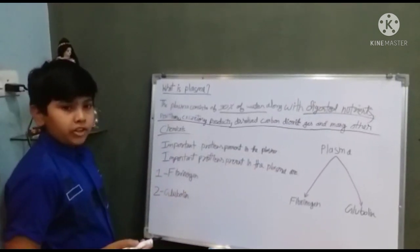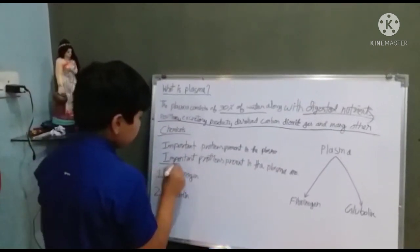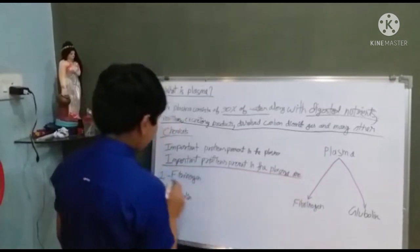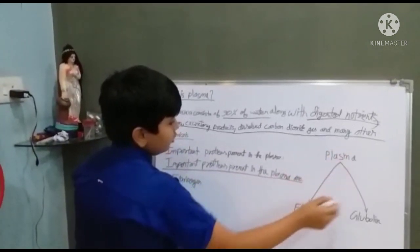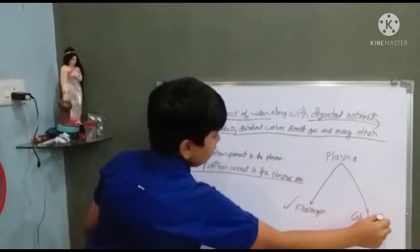Now let's talk about important proteins present in the plasma. The important proteins are fibrinogen and glycolate. I have made a diagram here showing that plasma consists of these two important proteins: fibrinogen and glycolate.